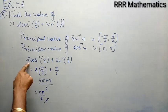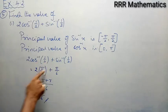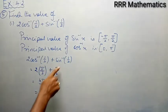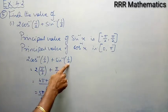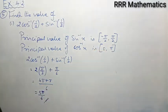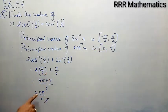So, 2 times cos inverse of half gives pi by 3, which lies between 0 to pi — within the principal value range. Sin inverse of half gives pi by 6, which lies between minus 90 to plus 90. Taking LCM and simplifying, we finally get 5 pi by 6. This is the required solution.